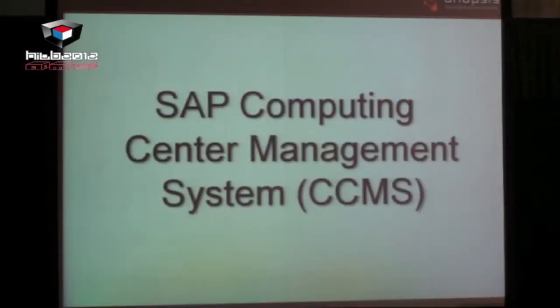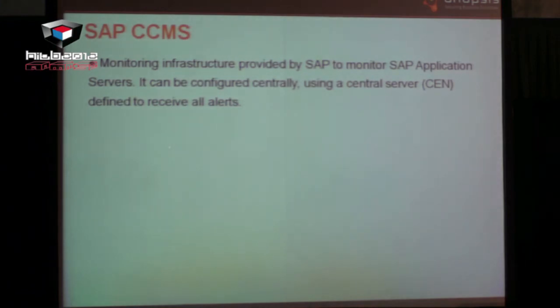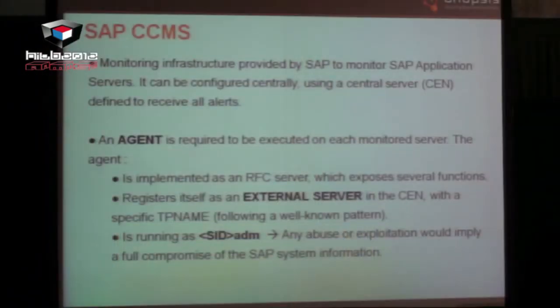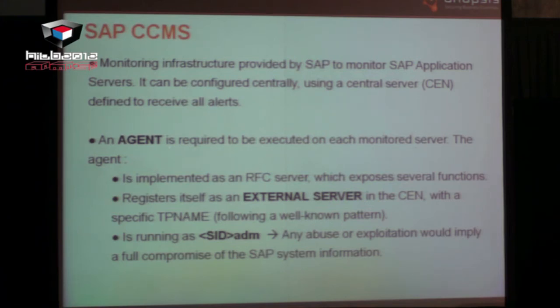CCMS is a monitoring infrastructure provided by SAP to receive events and monitor SAP systems. There is a central system — the CEN — that receives all events and alerts triggered by satellite SAP systems. An agent needs to be configured — a CCMS agent installed in both Java and ABAP systems. This agent is implemented as an RFC server that registers itself in the gateway of the central system, which means all gateway attacks apply here too.